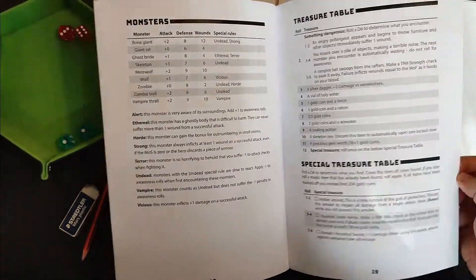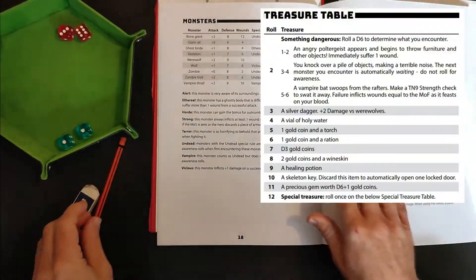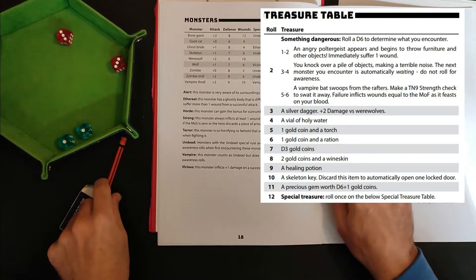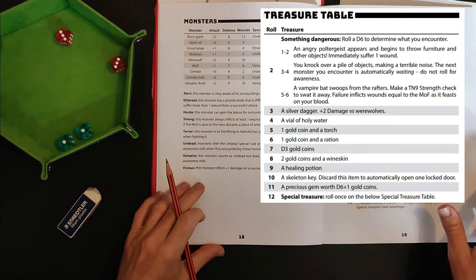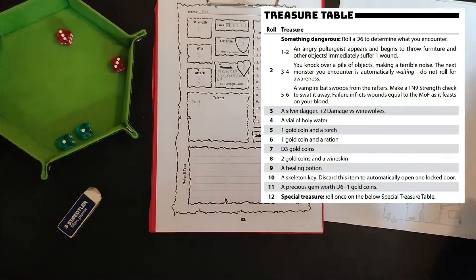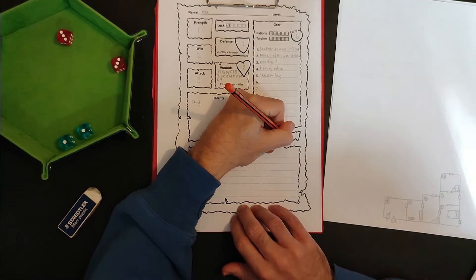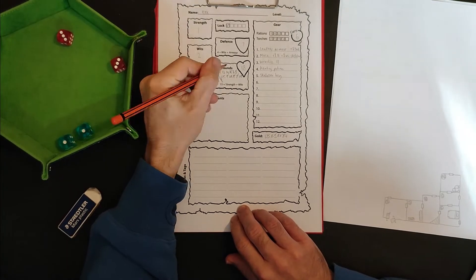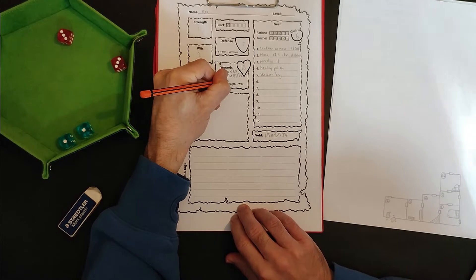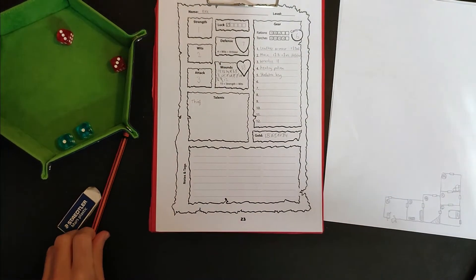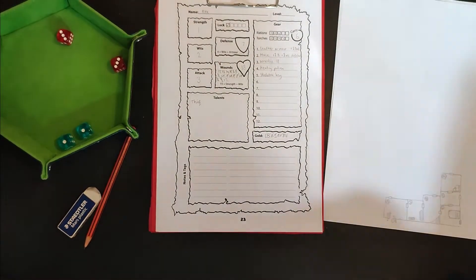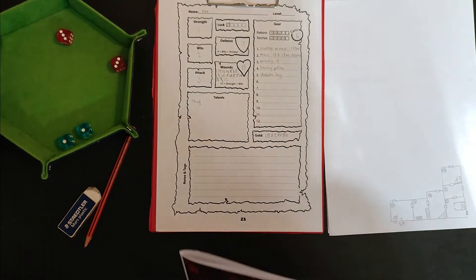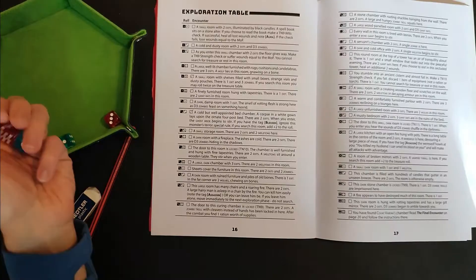Cool. Didn't present too much of an issue to me. Let's have a look at the old treasure table. See if there's any treasure in this room. Six, one gold coin and a ration. Why not? Takes me up to four gold coins. I'm going to immediately eat the ration. Taking me up to 12 wounds. All right, let's keep going. Shall we? Let's have a look through into the next room. Find out what's in there.